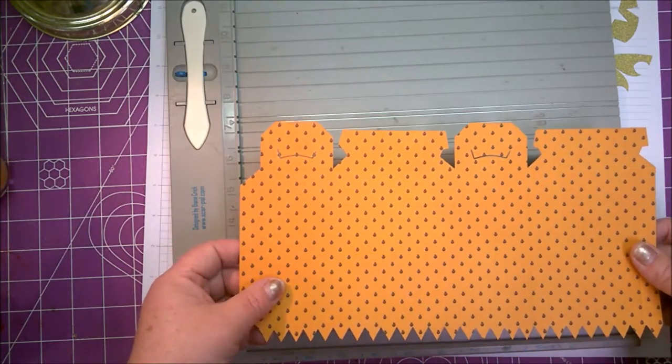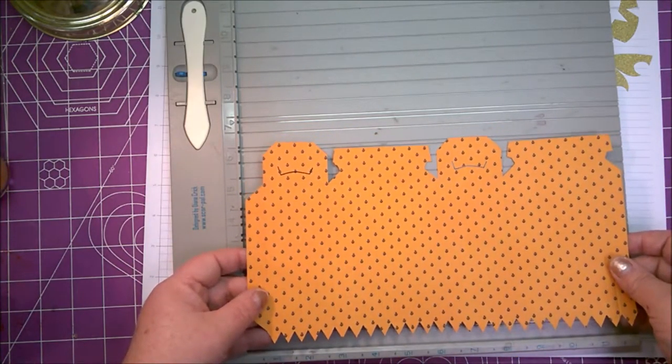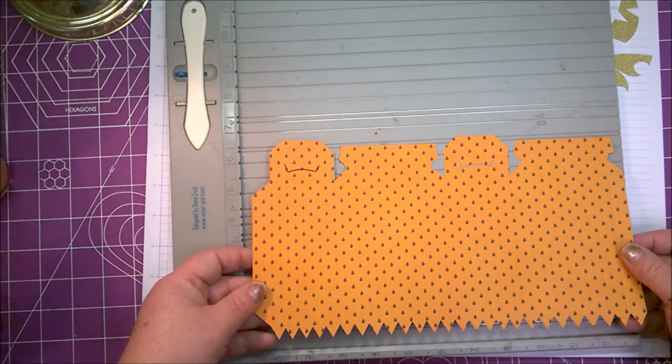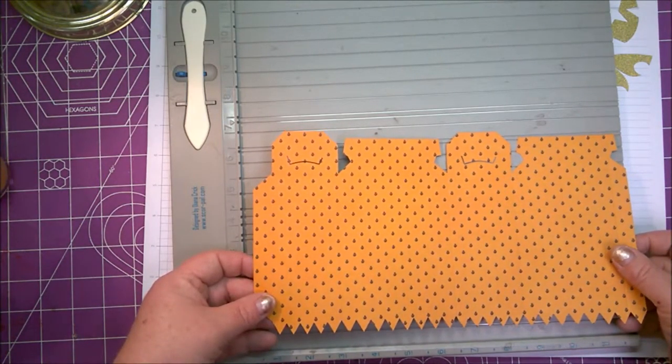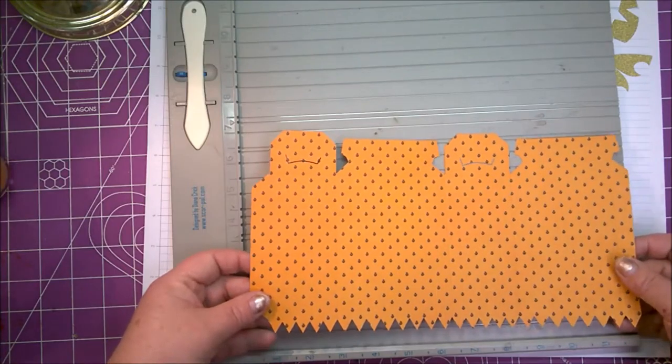Good morning everybody, this is Jennifer from Paper This and That. I'm here today putting together a project I just got done cutting on my Cricut, and it is a little treat bag for Halloween. This was an SVG file from SVG Cuts called Frightful Friends Treat Bags.